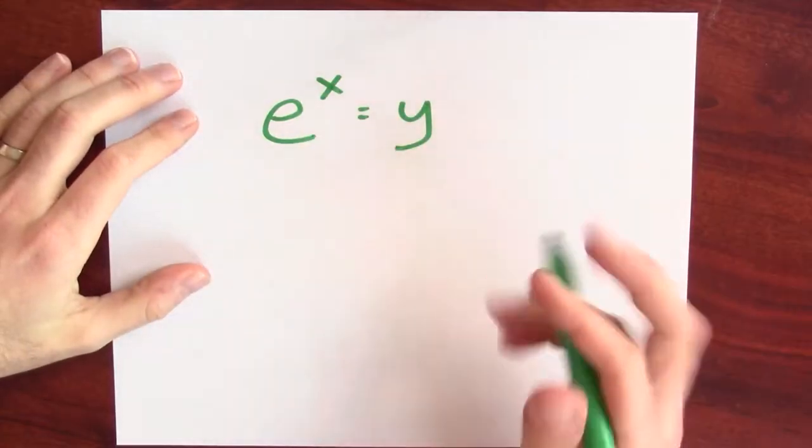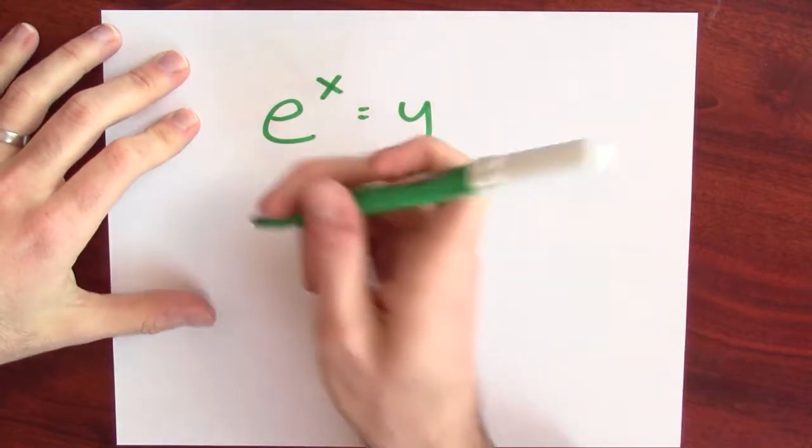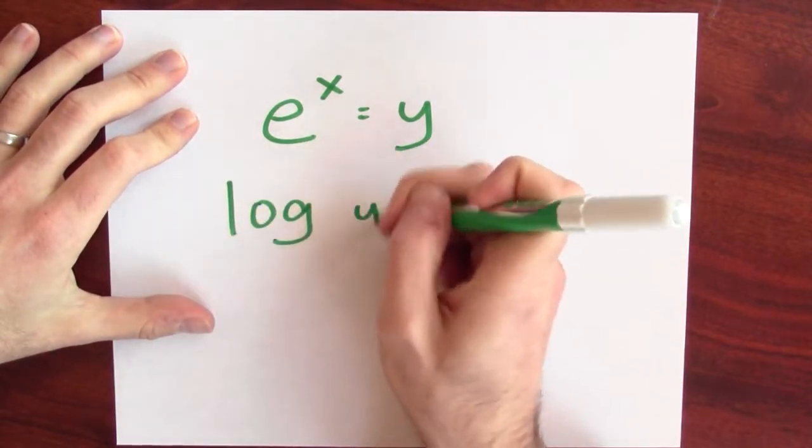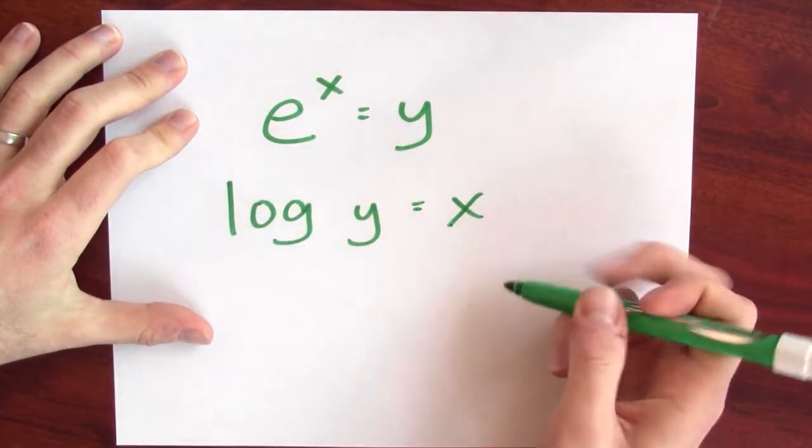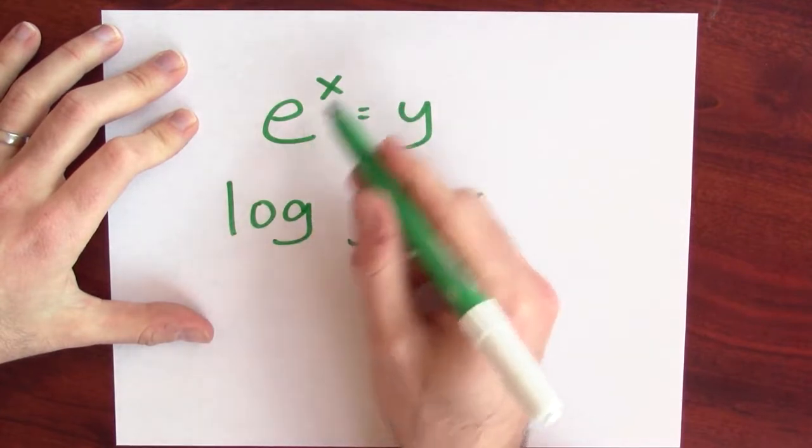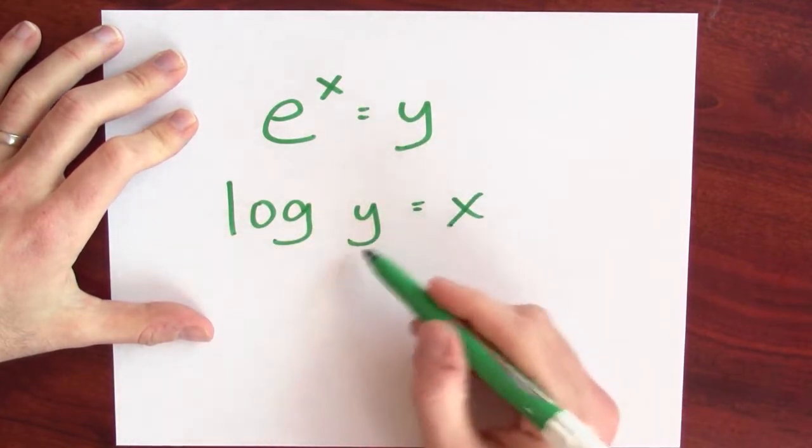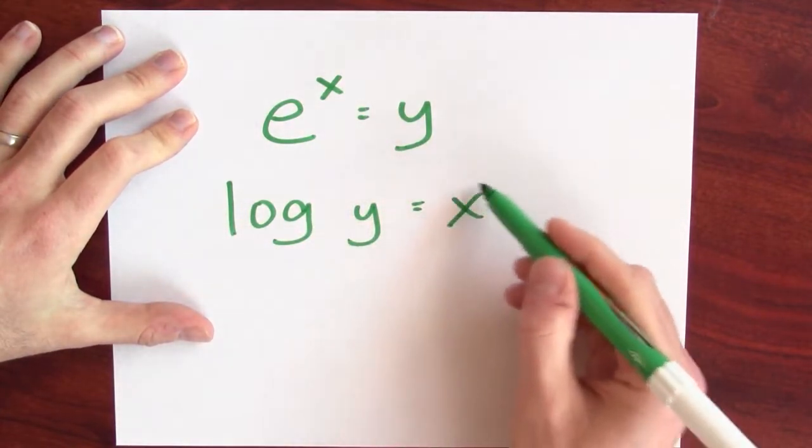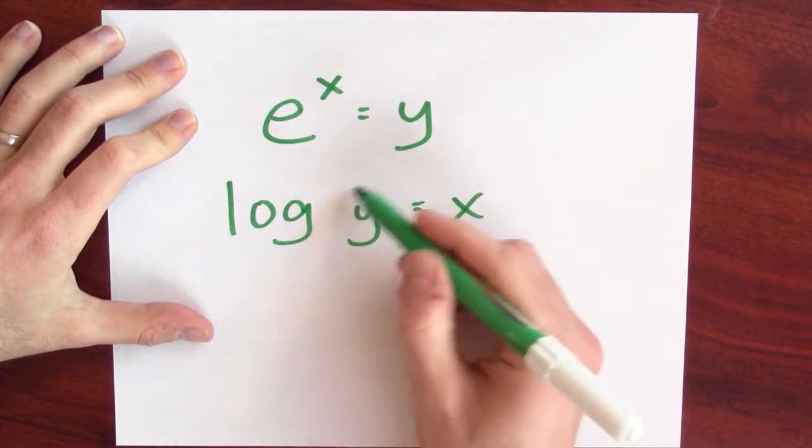What's the inverse function for e to the x? What function undoes that sort of exponentiation? Well, we don't really have a name for that function yet, so we're just going to call it log. In symbols, if e to the x equals y, then log y equals x. Log is the inverse function for e to the. Log of something tells me what I must raise e to, to get back the thing I plugged into log.